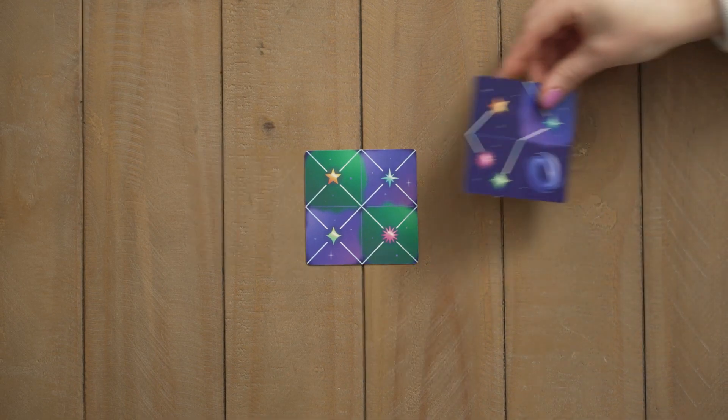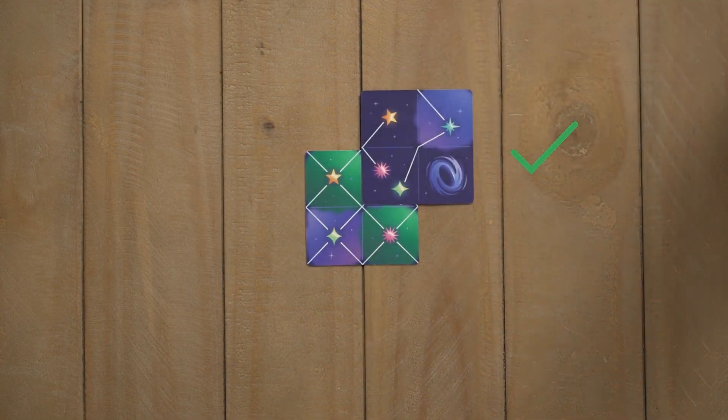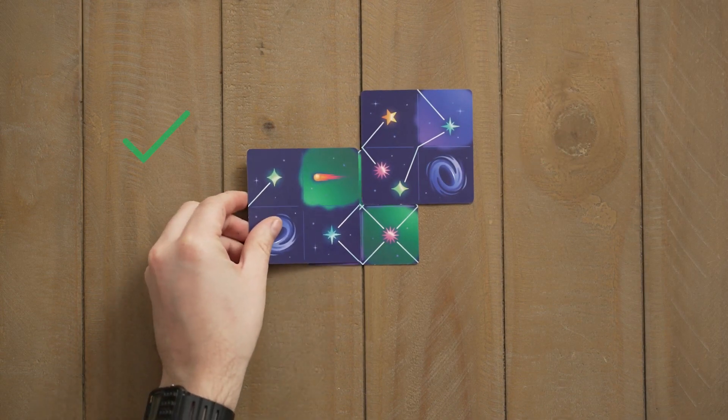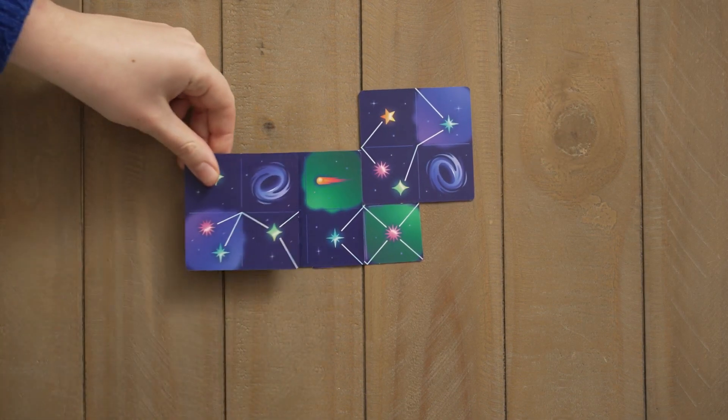You can place your card so it overlaps other cards. But you can't overlap a black hole, unless you put another black hole on top.